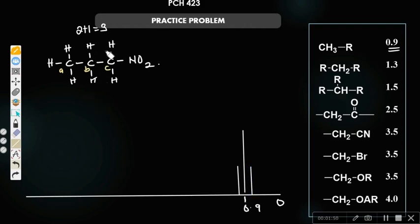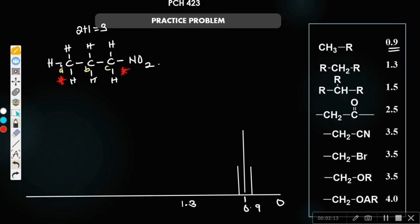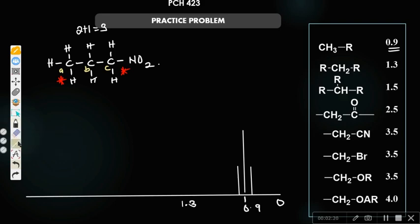Now, the next one is CH2, which is B. CH2 is around 1.3. Now, how many neighboring protons does B have? We have this group here and this group here as neighbors to B. This group has three protons and this group has two protons. Three plus two making it five. Five plus one is six, which makes it a sextet.